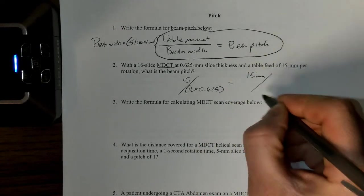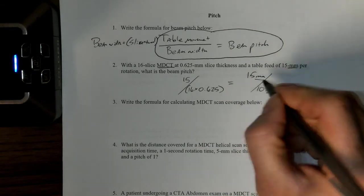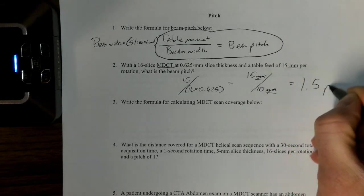I should write the units—this is important, we don't want to lose that. The millimeters cancel out and that gives us a pitch of 1.5. Pitch is a dimensionless number so it doesn't have a measurement like millimeters.